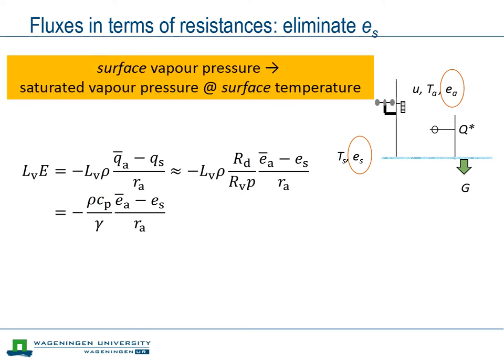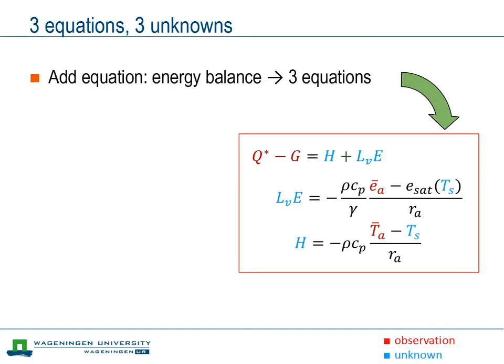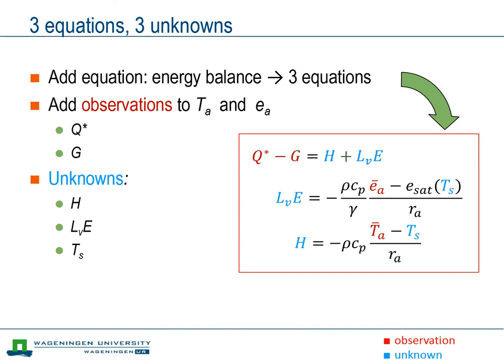With this new expression, we go to the next step: to eliminate the vapor pressure at the surface. We recall that above a wet surface, the air close to the surface is saturated. So we can replace the surface vapor pressure by the saturated vapor pressure at a temperature equal to the surface temperature. All the steps made until now result in a set of three equations — the two flux expressions plus the surface energy balance. Adding net radiation and soil heat flux to the observations of air temperature and humidity gives us three equations with three unknowns. In principle this system can be solved, however it cannot be done explicitly since the saturation vapor pressure function is non-linear. So although we are ready in principle, we are not yet ready in practice.